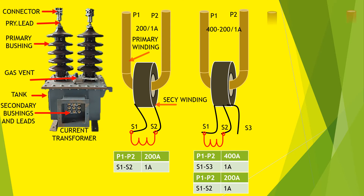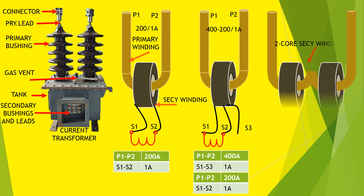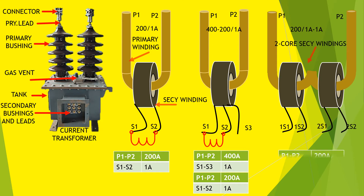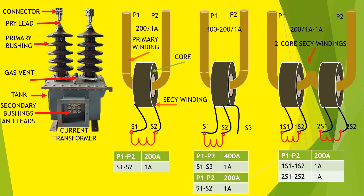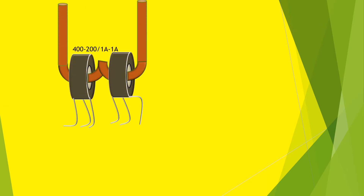In the third picture, the rating is 200/1 ampere, meaning the secondary has two cores: 1S1 and 1S2, and 2S1 and 2S2. Current flows at both secondary windings is 1 ampere when 200 ampere normal current flows along P1 and P2. The CT has two secondary core windings used for two different purposes.